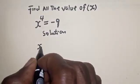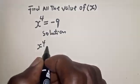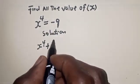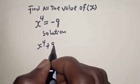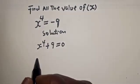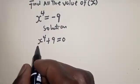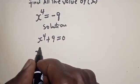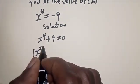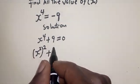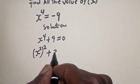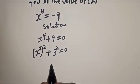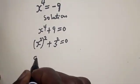We have x raised to power 4, then if minus 9 comes to the other side it becomes plus 9, equal to zero. Now x raised to power 4 can be written as x squared squared, and plus 9 can be written as 3 squared, equal to zero.